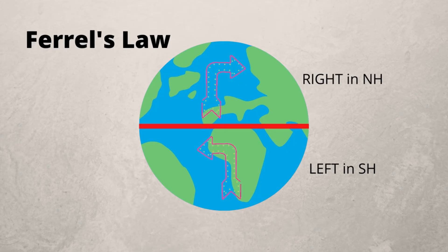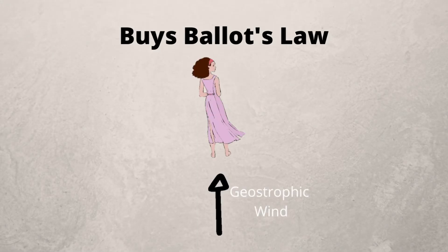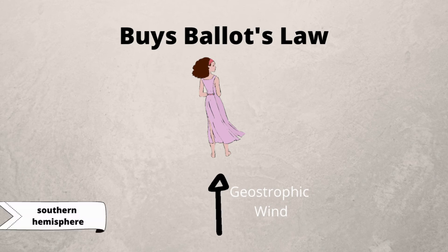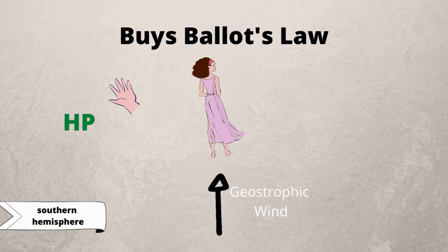There is another law that goes along with this concept called Buys Ballot's Law. This law states that if you are standing with your back to a geostrophic wind in the southern hemisphere, the high pressure will be on your left hand side and the low pressure will be on your right.